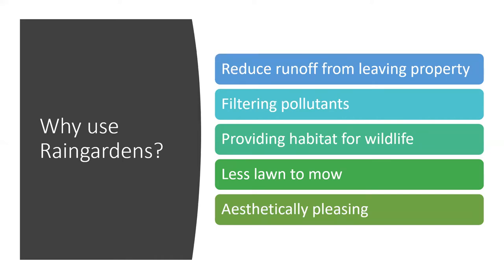Rain gardens also provide great wildlife and pollinator habitat because we incorporate flowering plants and grasses. Those flowers are great nectar and pollen sources for pollinators, and the plants provide nesting habitat and shelter for other wildlife. They create less lawn to mow since you're planting in an area that used to be grass. And they're aesthetically pleasing because they utilize flowers and grasses, with something blooming all season long.